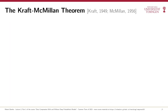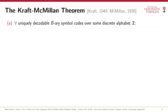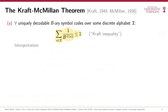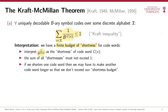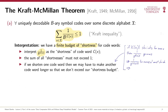This constraint is given by the Kraft-McMillan theorem, which has two parts. Part A states that every uniquely decodable b-ary symbol code satisfies the Kraft inequality: the sum over all codewords of 1/b raised to the power of the codeword length cannot exceed 1. The intuition is that you have a finite budget of shortness for all codewords — calling 1/b^(length) the shortness, the sum of all shortnesses must not exceed 1. Therefore, if we want to make one codeword shorter, its shortness grows, and we must make some other codeword longer to stay within budget.